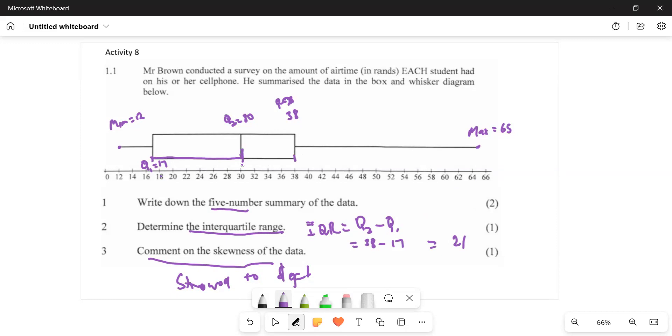What are we going to do next? What we are supposed to do is compare more than one box and whisker. What if we are given more than one box and whisker? Then they say we should compare them. How do we compare?